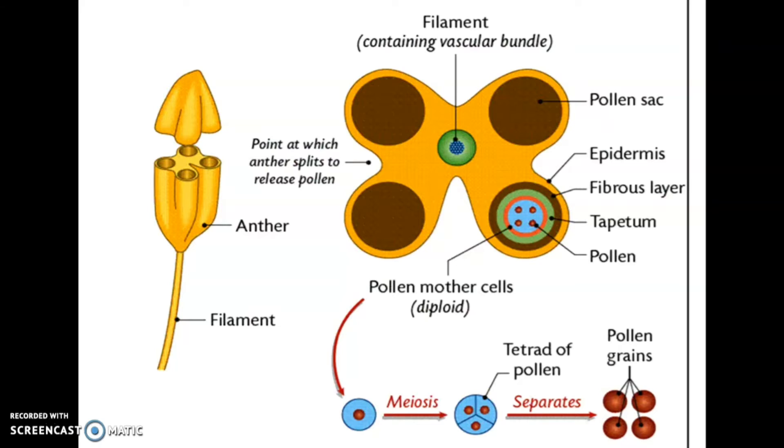A typical angiosperm anther is bilobed, with each lobe having two theca. That's why it is known as dithecous. Often a longitudinal groove runs lengthwise separating the theca. The bilobed nature of an anther is very distinct in the transverse section. Here you can see transverse section of anther. If you take a transverse section through the anther, we will get a structure like this.